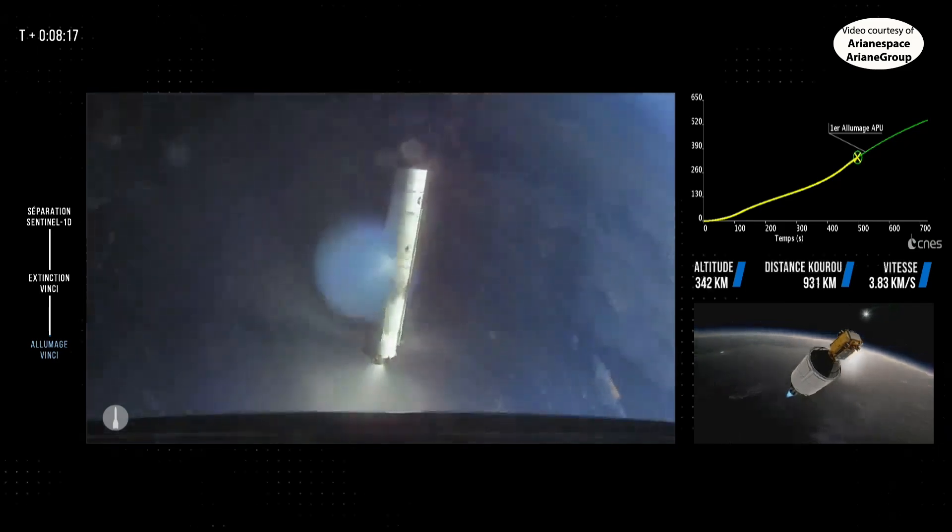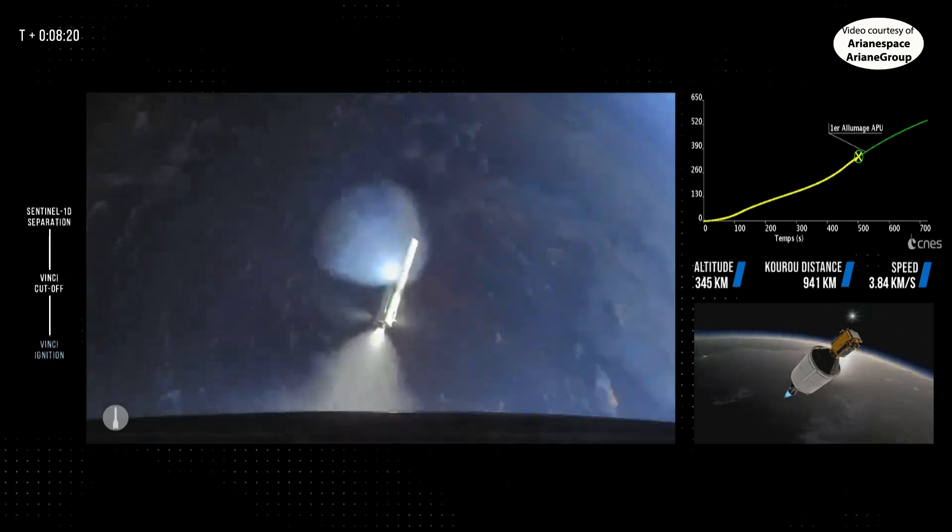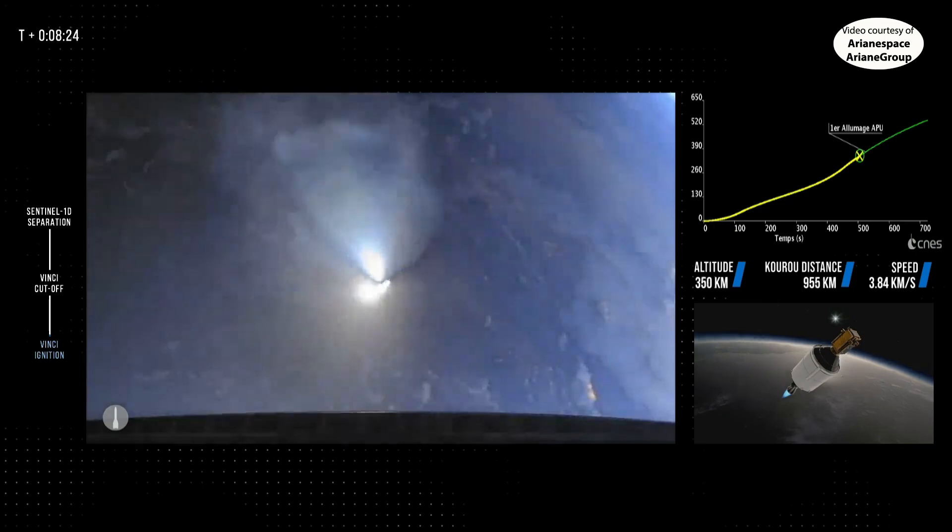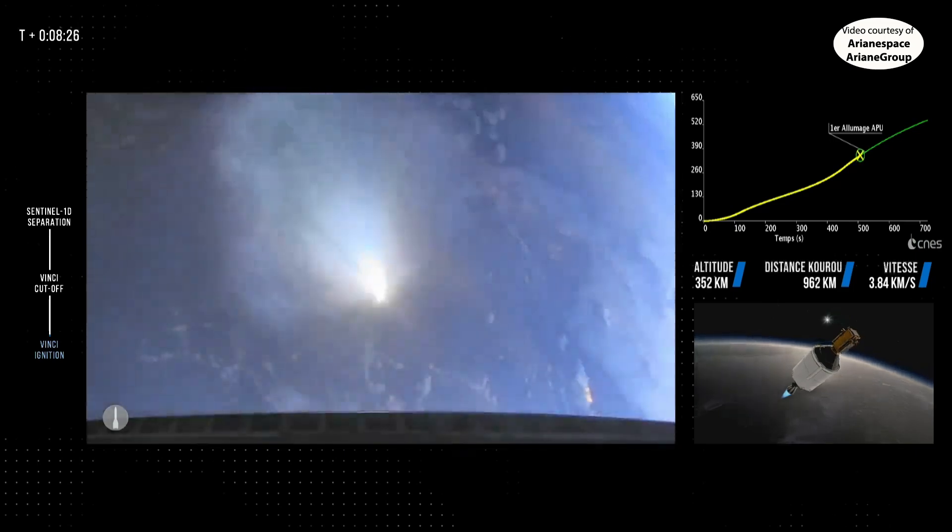Jettisoned and then tilted slightly so that the Vinci, when ignited, doesn't throw propellant to the rear bulkhead.